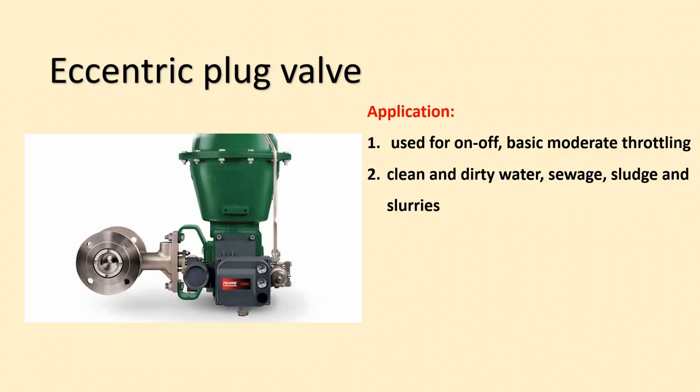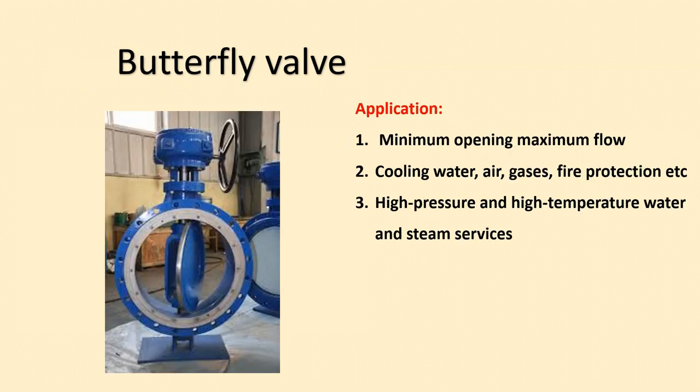Next, for rotary type valve bodies, we discuss the eccentric plug valve. From the diagram you can see that the valve motion is clockwise — it is a rotary type. This valve is basically used for on-off applications and offers only moderate throttling service. The best application of this valve is in abrasive fluids, sewage sludge, and chemical slurries piping.